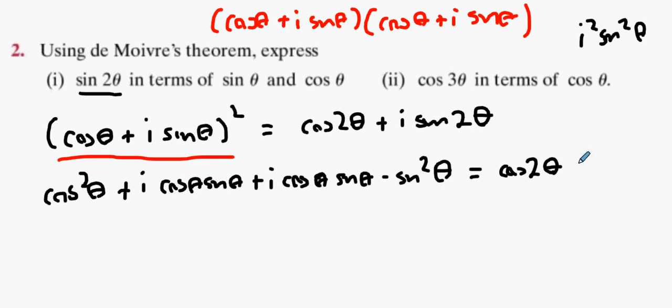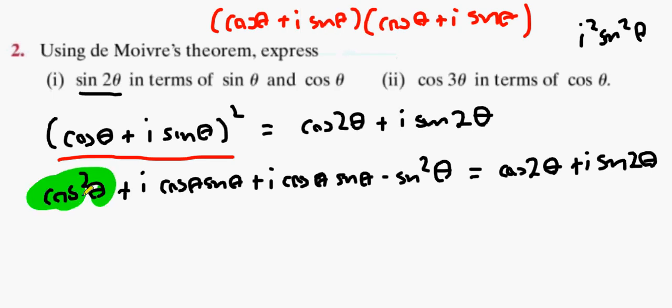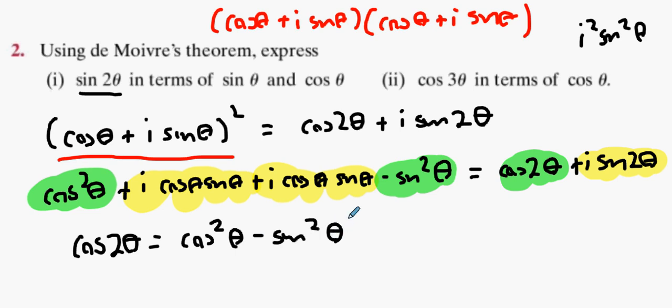Now we're going to do what we always do. Real equals real. Imaginary equals imaginary. Does anybody see what we've got there? Check out your highlighter. Real. Real. Real. Imaginary. Imaginary. Imaginary. Okay, what's that? So the real one is cos 2 theta is actually equal to cos squared theta minus sine squared theta. Go with that?